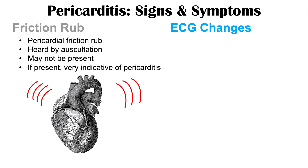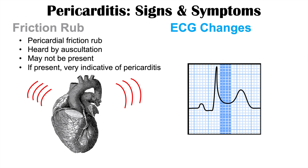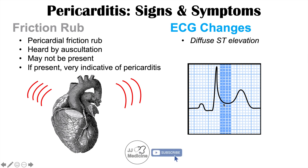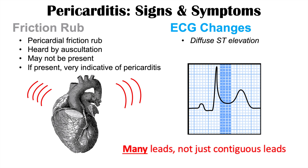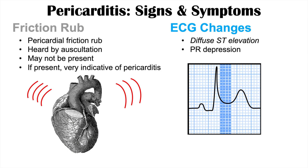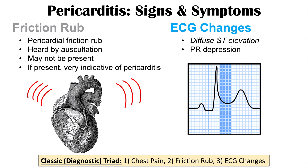There are also ECG changes that occur with pericarditis. What will be found is diffuse ST elevation — the ST segment is elevated compared to other segments, and it is diffuse, found in multiple leads, which is very characteristic of pericarditis. The PR segment is also depressed, which is another characteristic finding. These two ECG findings, along with the pleuritic and positional chest pain and the friction rub heard by auscultation, make up the classic diagnostic triad for pericarditis.